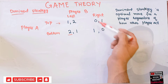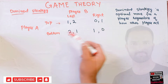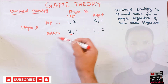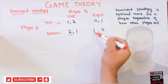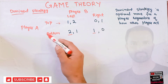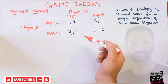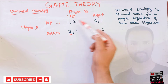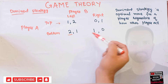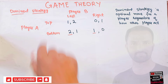Similarly, if player B chooses right, player A has two options: either to go top or to go bottom. Going bottom gives him one as payoff and going top gives him only zero payoff. So player A will choose to go bottom in this case. Regardless of what player B does — whether he goes left or right — player A will choose to go bottom.